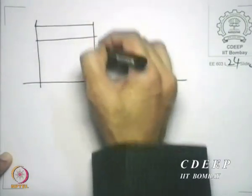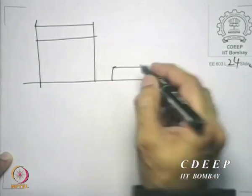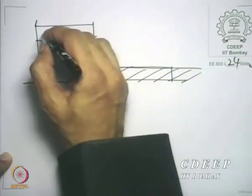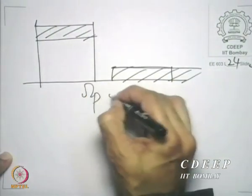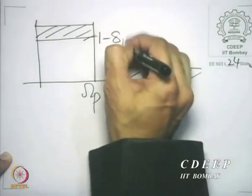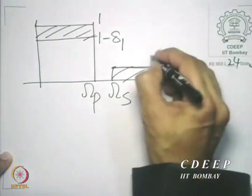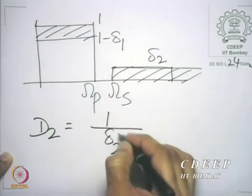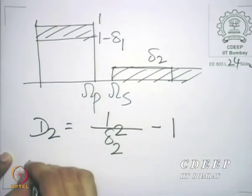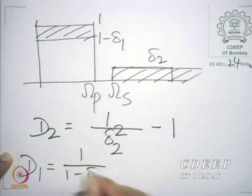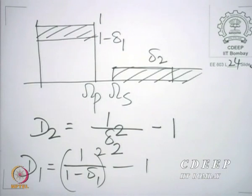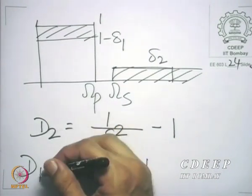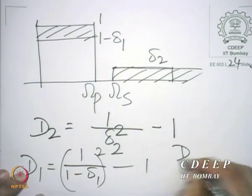Recall that this is the specification with which we are working for the low-pass filter — of course, this is an analog filter. You have omega_p here, you have omega_s, you have 1 minus delta_1 here and 1 there and delta_2 here. And d2 is 1 divided by delta_2 squared minus 1, and d1 is 1 divided by the quantity (1 minus delta_1) squared, minus 1.